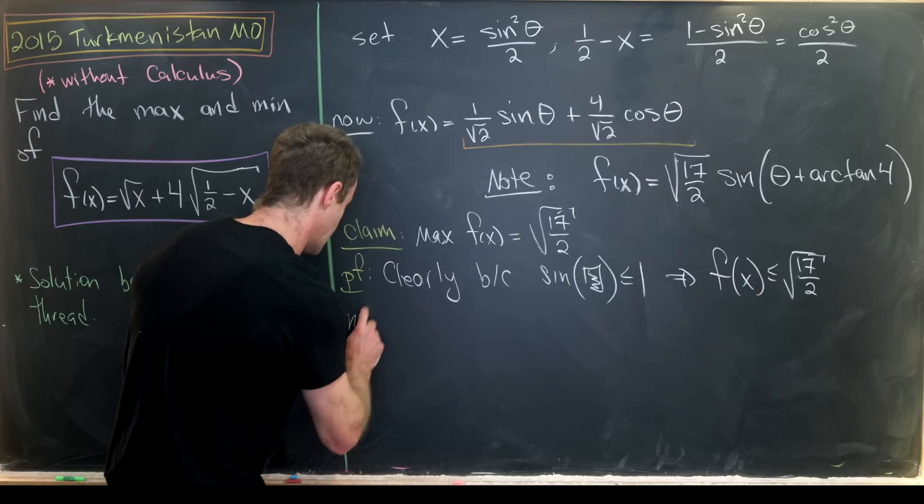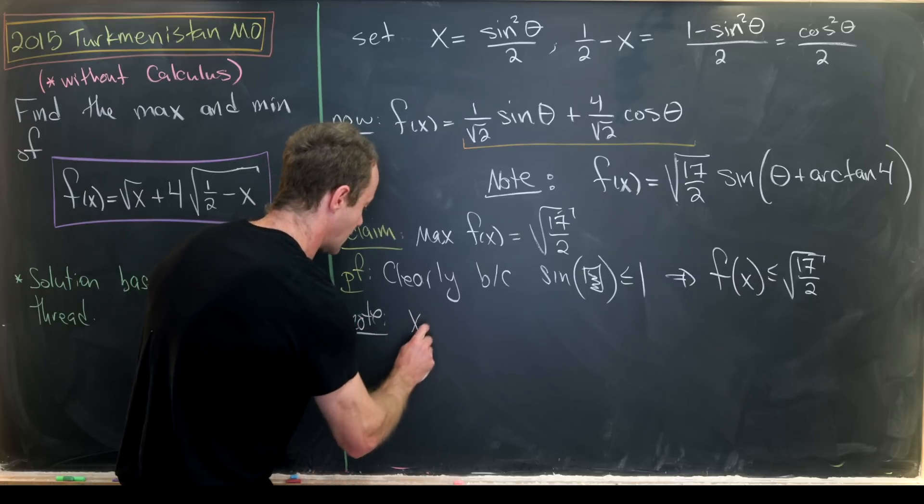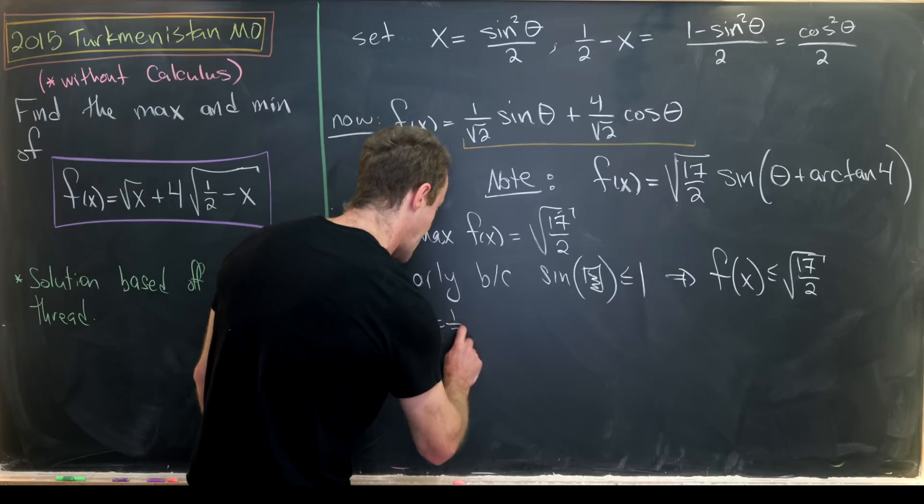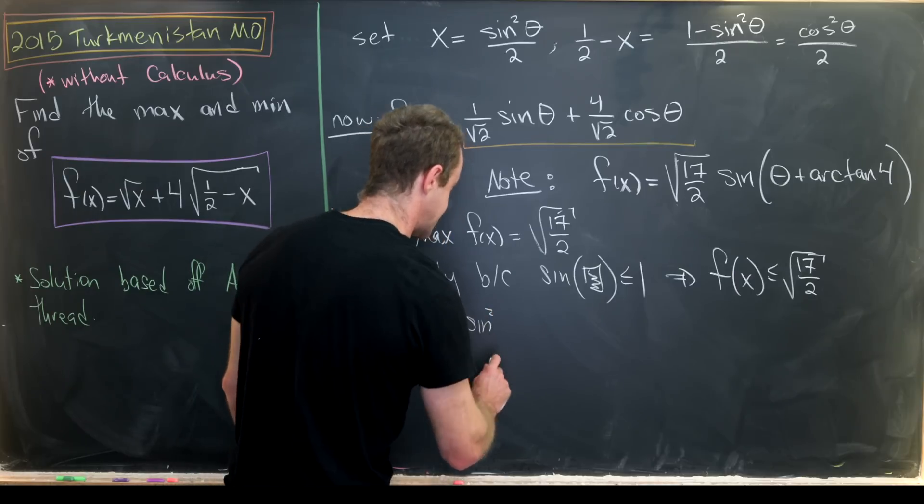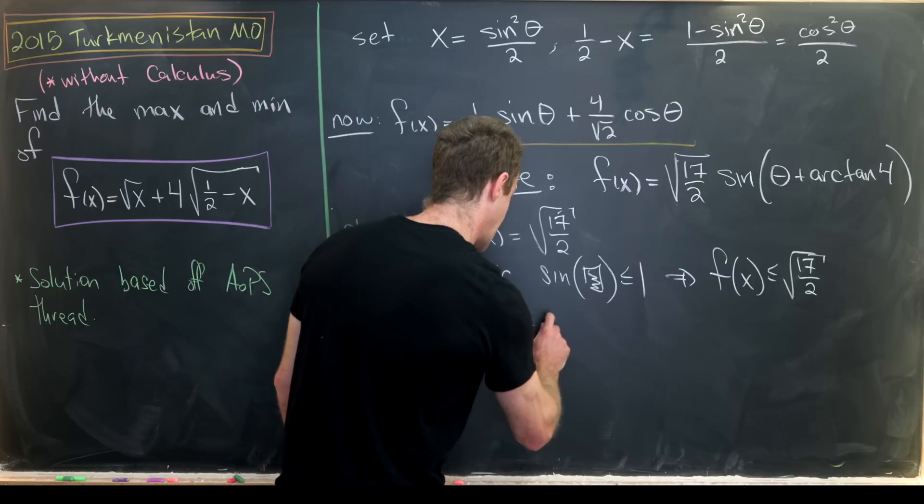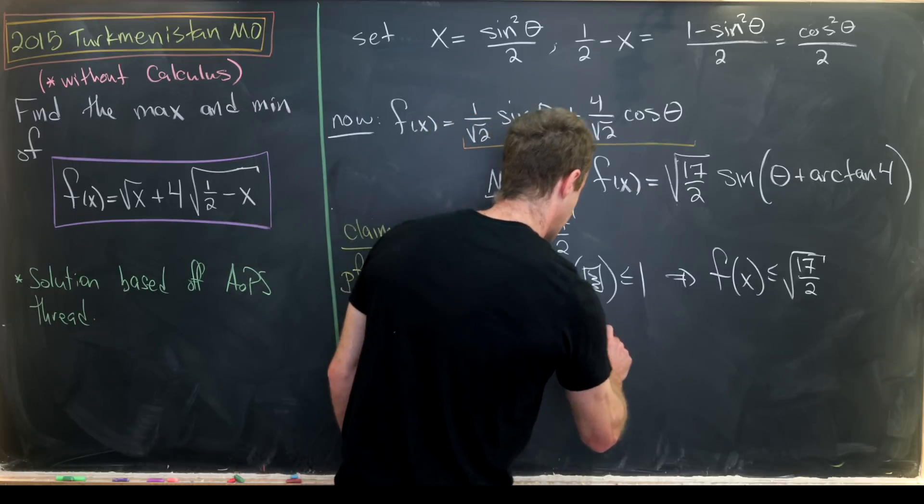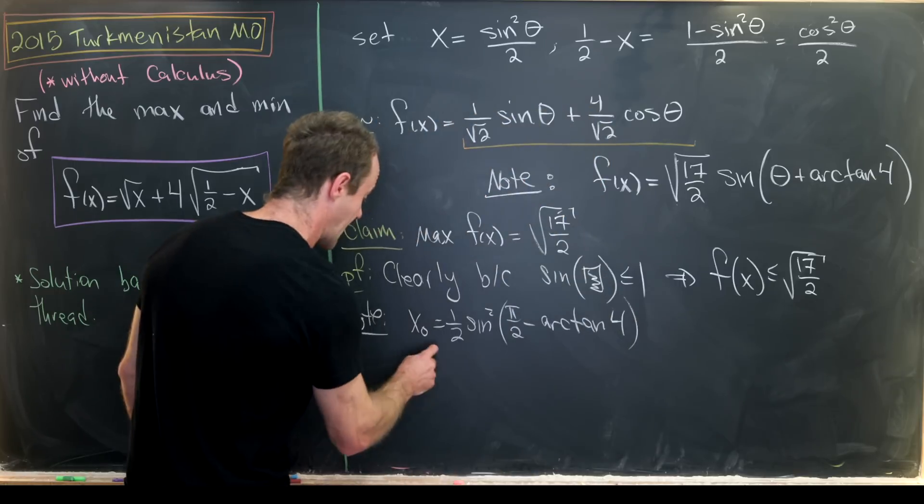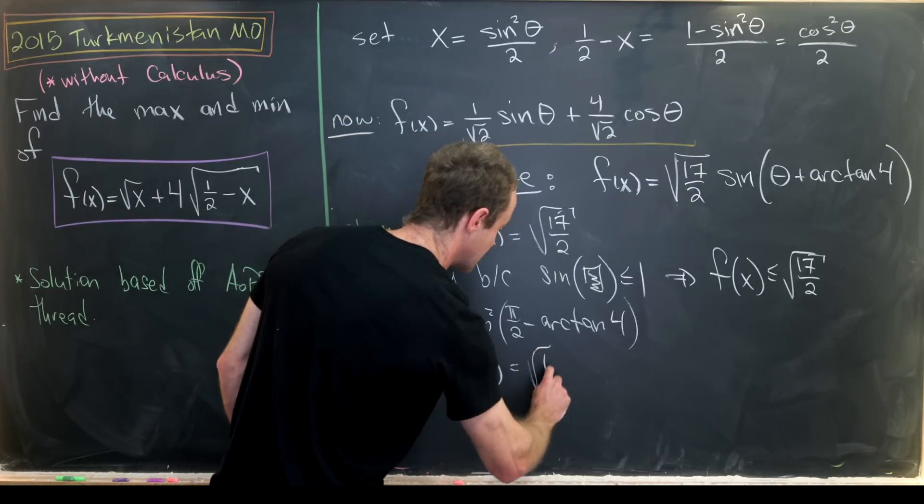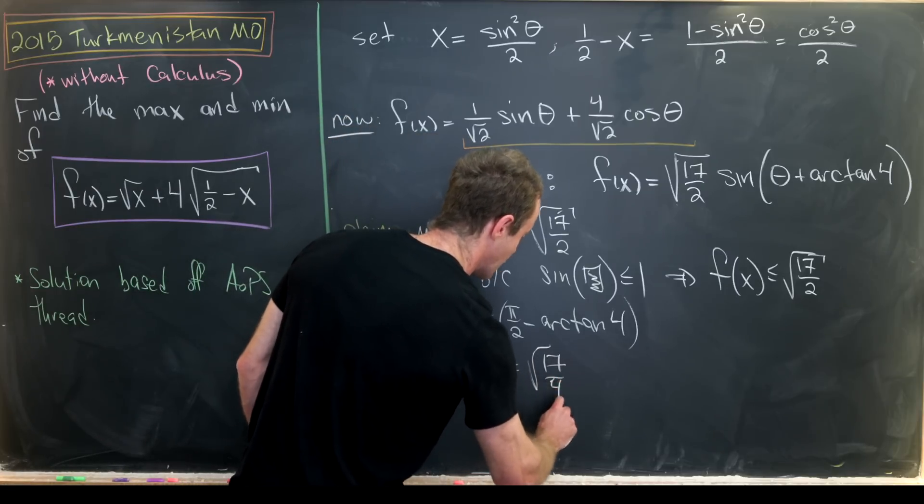Now we just have to find a value of x that achieves that maximum. And let's note that if we set, maybe I'll call it x naught, equal to 1 half times the sine squared of pi over 2 minus arctan of 4, then by our construction, that means that f of x naught is indeed equal to the square root of 17 over 4.